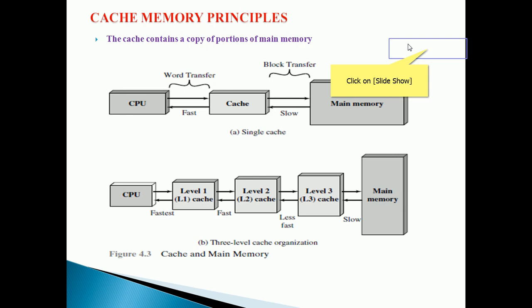If you see carefully in the first diagram, that is single-level cache or single cache, the cache is placed in between the CPU and the main memory. In between CPU and cache, whatever communication is performed that is through a word transfer, and the communication between the cache and the main memory we are having block transfer of the information.